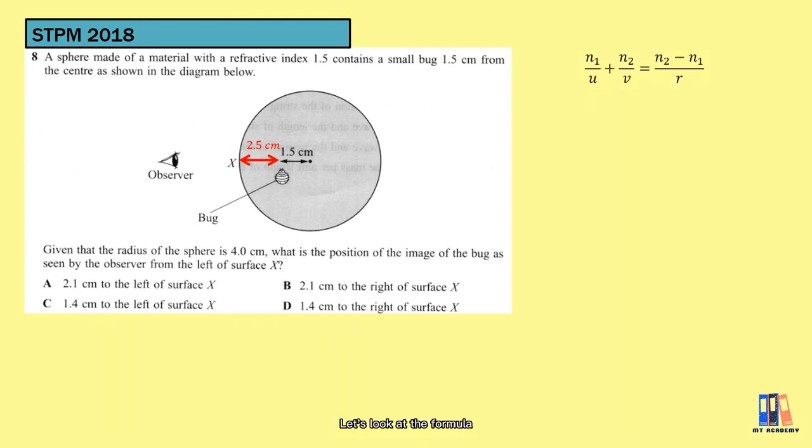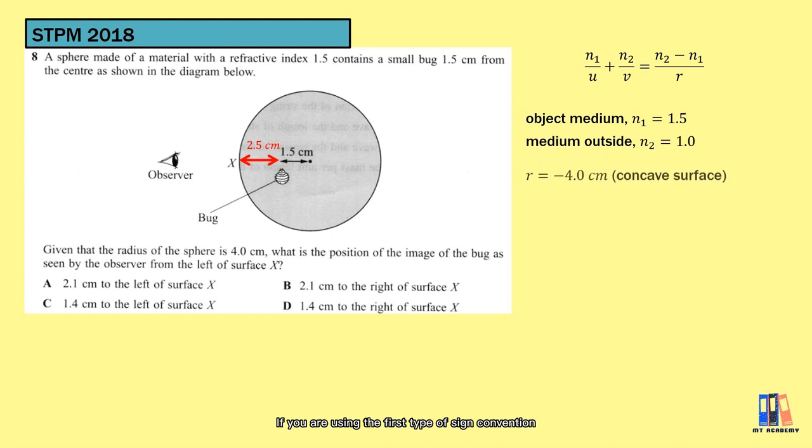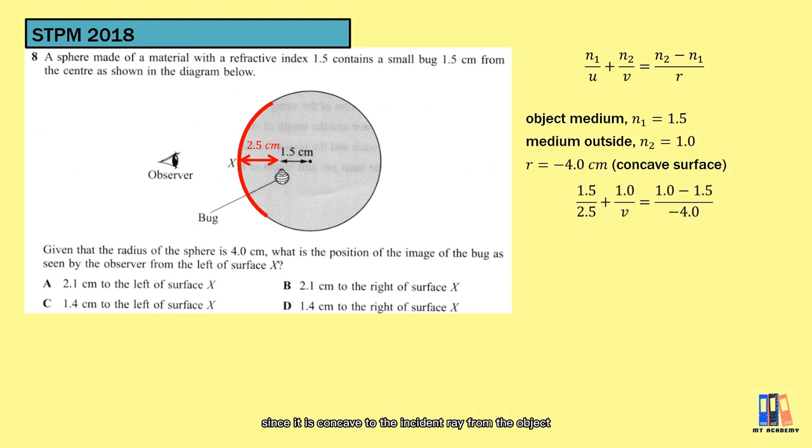Let's look at the formula. N1 should refer to the medium where the object is located, while n2 is the other medium. If we are using the first type of sign convention, the radius here is a negative value since it is concave to the incident ray from the object.